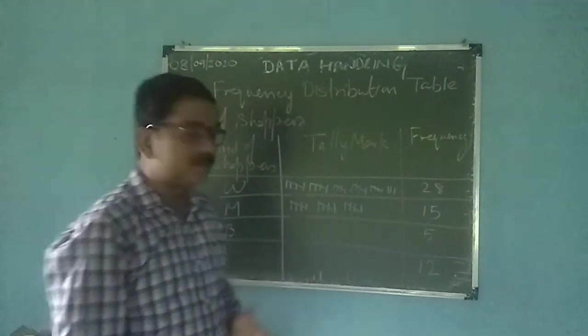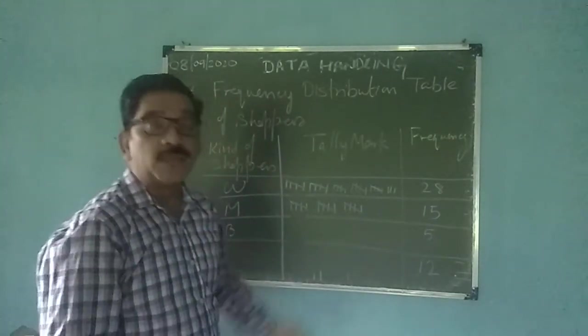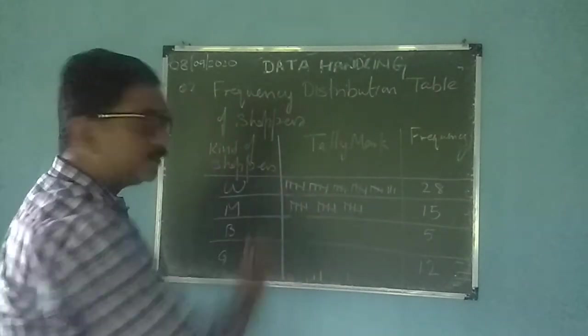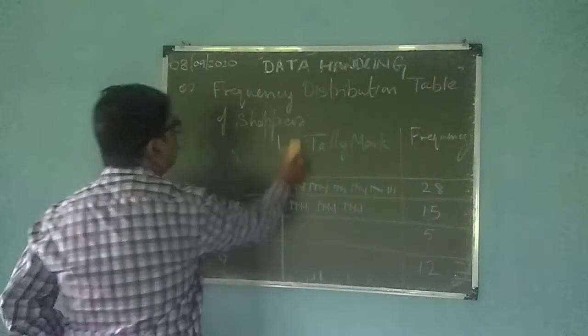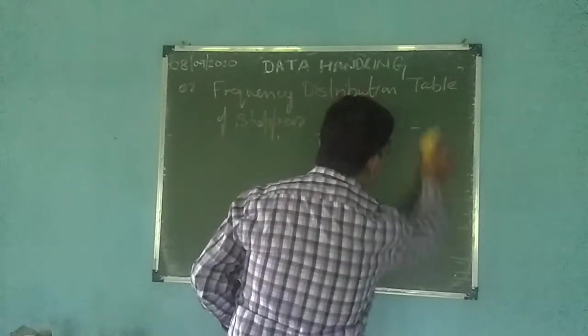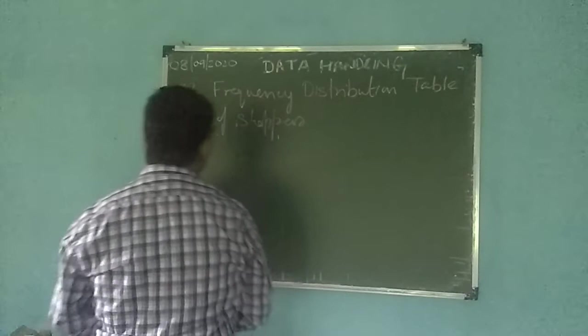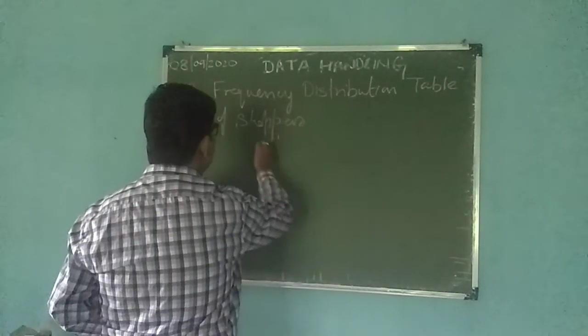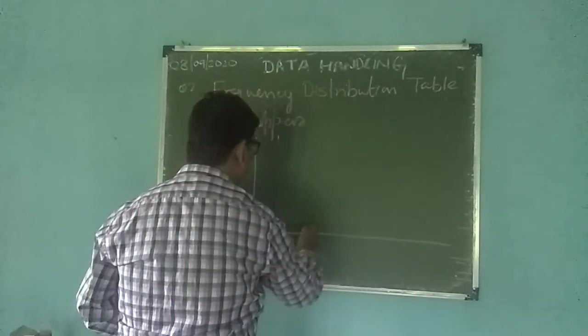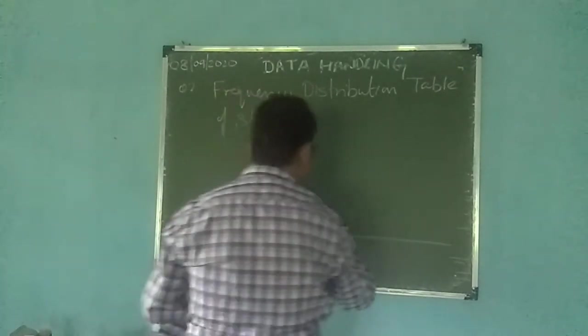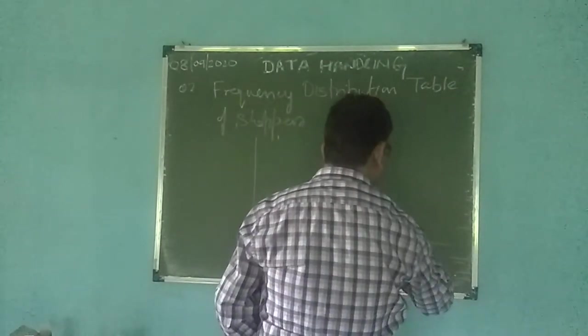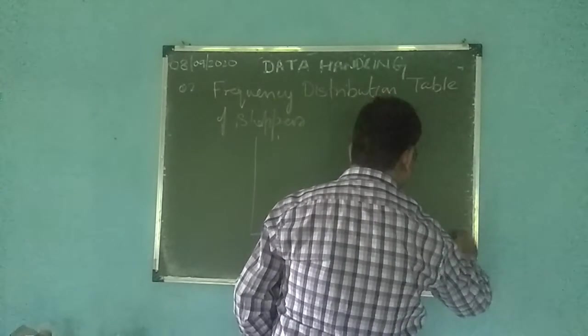Is this clear? So in this way you have to make that table. Now how to draw the graph? Half of this, that is bar graph. So I have to rub this now. One, this is W, this was M, this was B, and this was G.